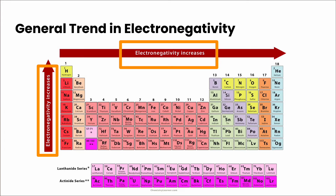In terms of the reasoning, it's similar to ionization energy, so you can use the same sort of justification. Across a period, electronegativity increases because the effective nuclear charge increases and the atomic radii decreases. Down a group, electronegativity decreases because atomic radii is increasing, and although the nuclear charge Z increases, its effect is shielded by the core electrons.